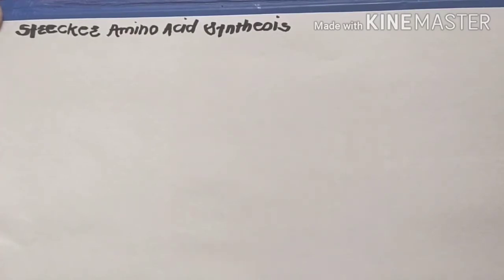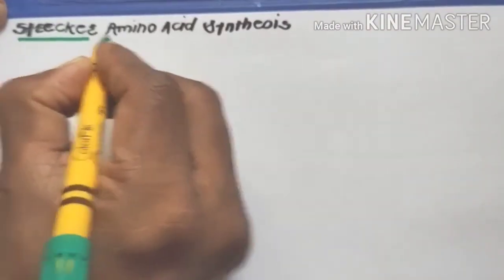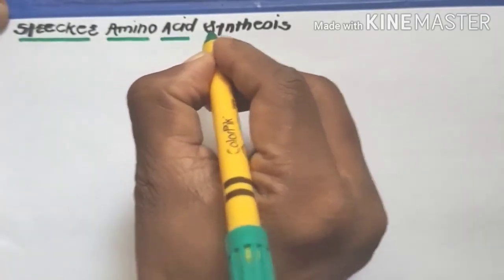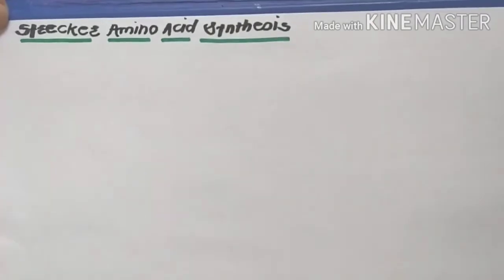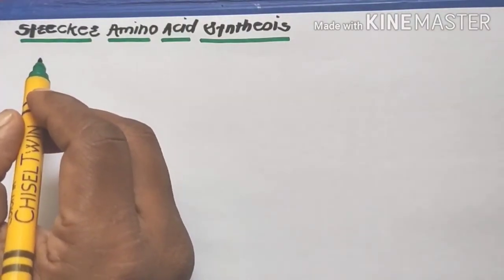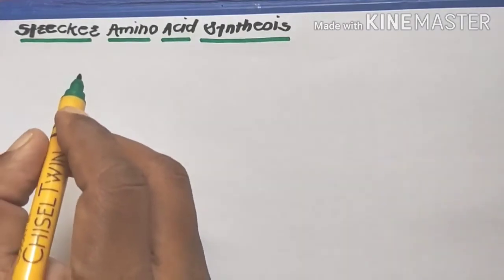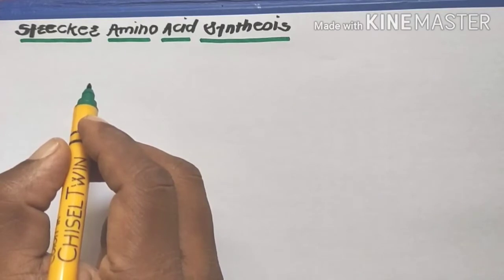Today we are going to discuss a new example from multi-component synthesis — Strecker's amino acid synthesis. This is an example of multi-component synthesis, meaning more than two components are used in the reaction to form a final product. The Strecker synthesis is an important method for the synthesis of amino acids and is useful for the preparation of glycine, alanine, serine, valine, and glutamic acid — all examples of alpha amino acids.